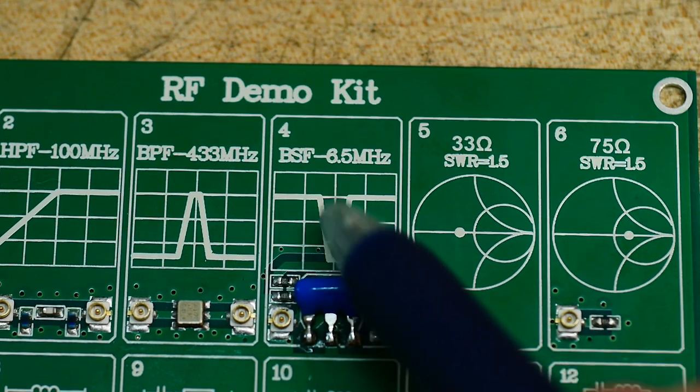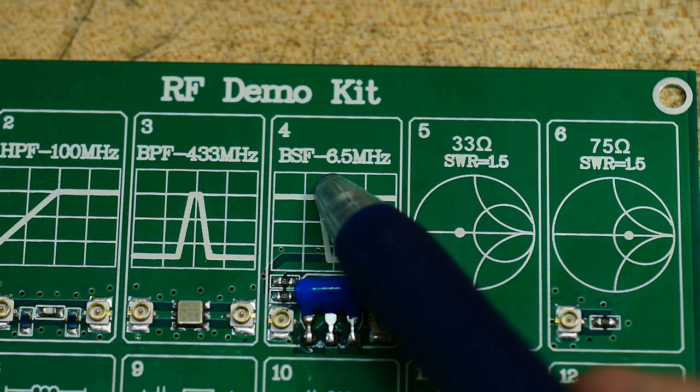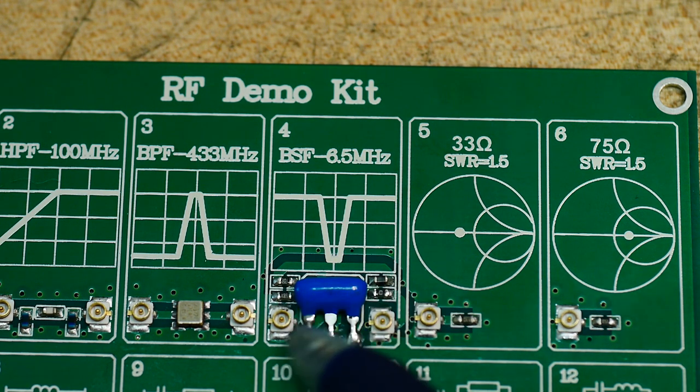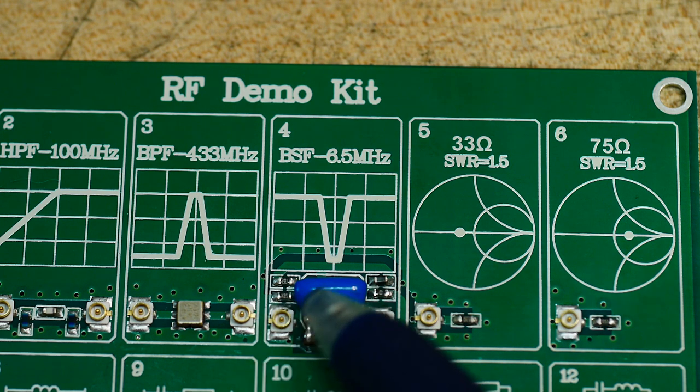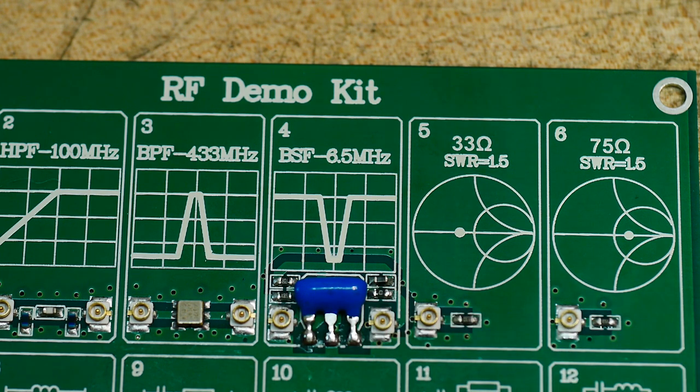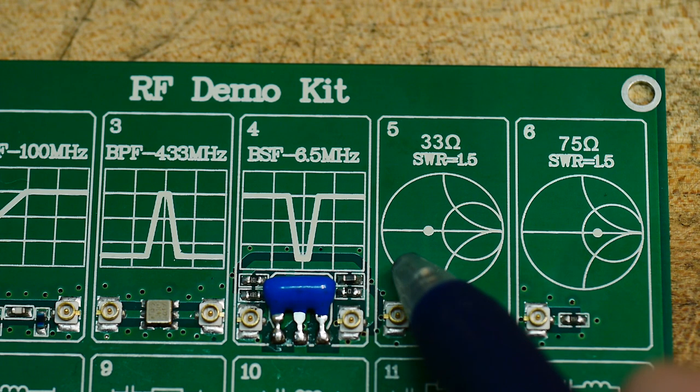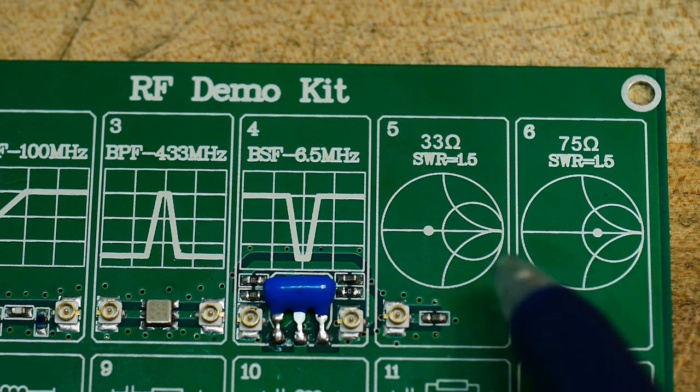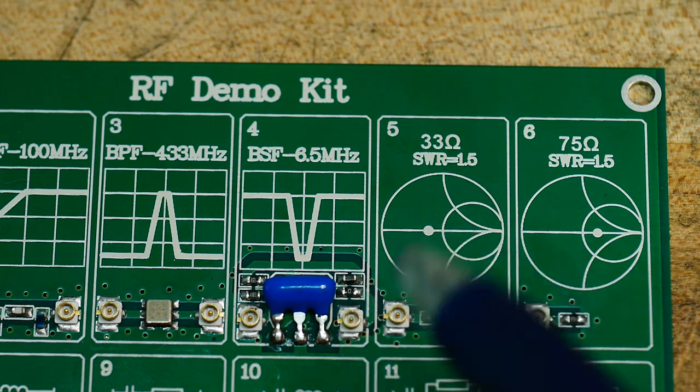And the same with the notch filter. There's a 6.5 megahertz notch filter. And again, it's some type of device that already has that in there.